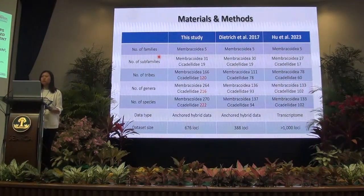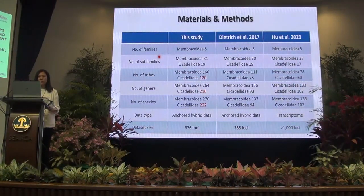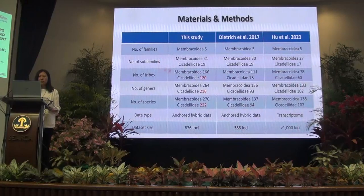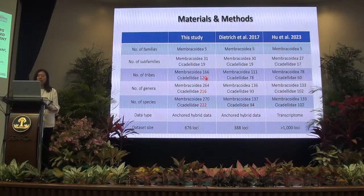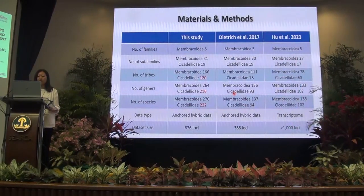Our aim is to resolve the relationships for most leafhopper subfamilies by adding more taxon samples and using more molecular data. In our study, we have representatives of all five families and 31 subfamilies of Membracoidea, and representatives of all subfamilies of Cicadellidae. For tribes, we have 220 of the 228 known tribes of leafhoppers. Compared to the other two studies, the number increased about one-third to half. For genera and species, we have over 200 genera and species of leafhoppers, about twice the other two studies.